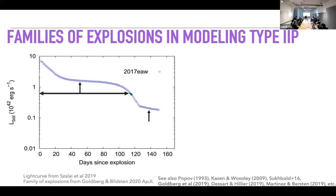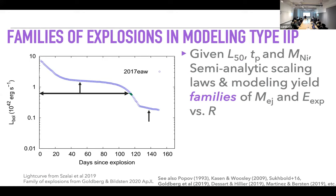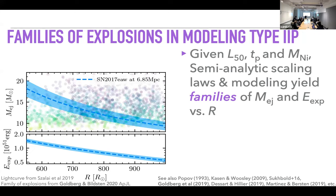You measure how bright the supernova is, how long it lasts, how much nickel was produced (which corrects for extra energy from nickel decay), and then invert semi-analytic scaling laws calibrated from numerical simulations. You get a useful degeneracy: for the same brightness and duration, there's a relationship — the more mass you have, the more explosion energy and smaller radius you need. A smaller ejecta mass with a bigger radius and lower explosion energy can produce the same light curve.